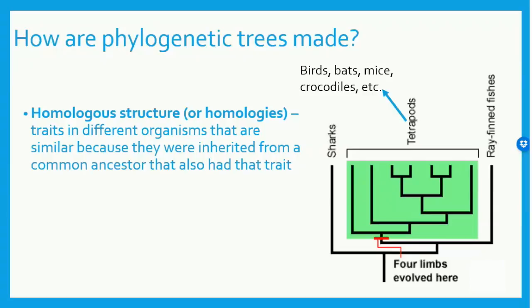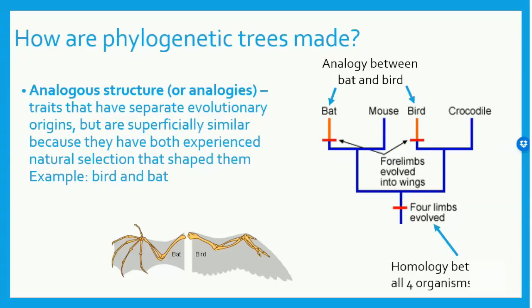There are some terms for patterns you may have noticed while making your own tree. Homologous structures, or homologies, are traits in different organisms that are similar because they are inherited from a common ancestor. In this picture, a homology of all tetrapods is four limbs. Analogous structures are traits that have separate evolutionary origins but are superficially similar because they've experienced natural selection that shaped them. An example of this is a bat and a bird — although they both have wings, they aren't closely related. Genetic work can help sort out the differences between analogous and homologous structures.